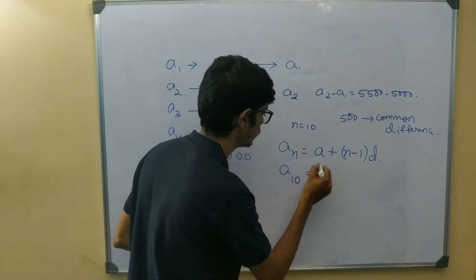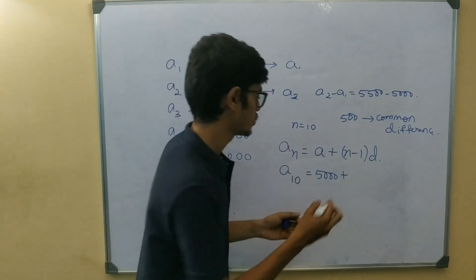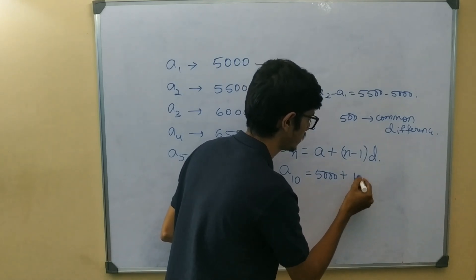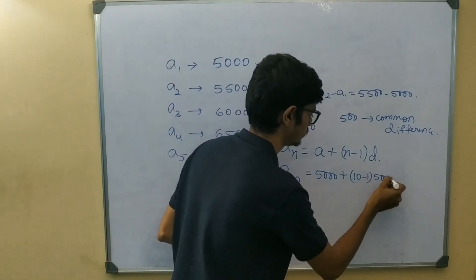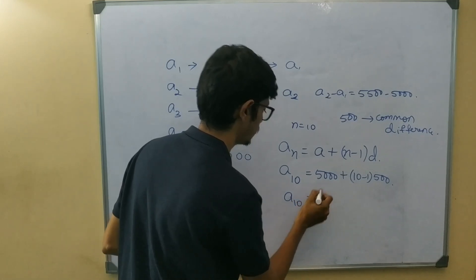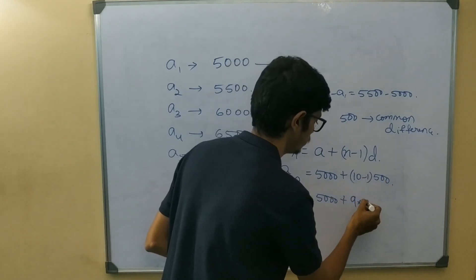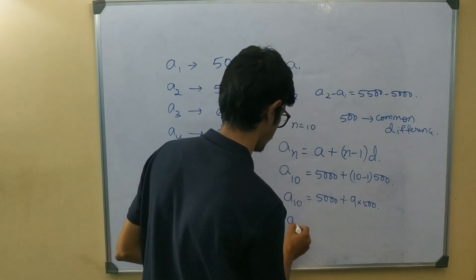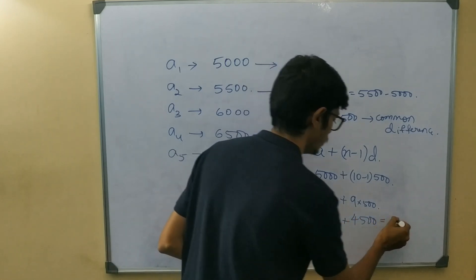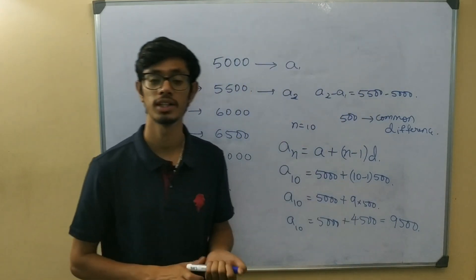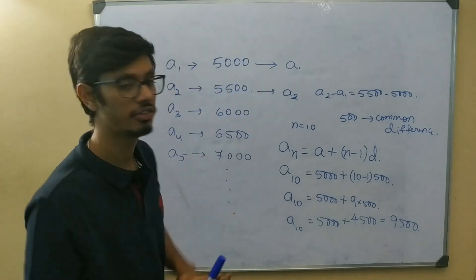Now, to find the 10th term: a10 is equal to a — the first term is 5,000 — plus 10 minus 1 into d. What is d? d is the common difference, which is 500. So 10 minus 1 is 9, and 9 into 500 is 4,500. So a10 equals 5,000 plus 4,500 equals 9,500. That is the arithmetic progression formula applied.